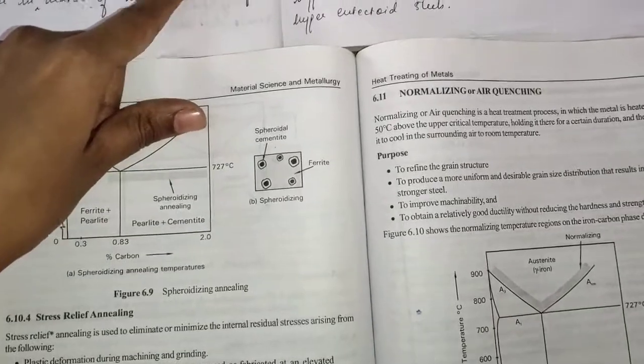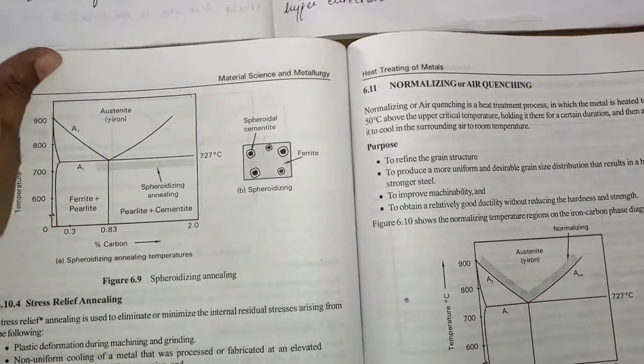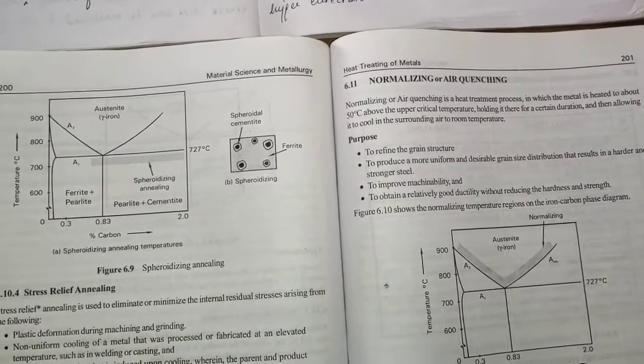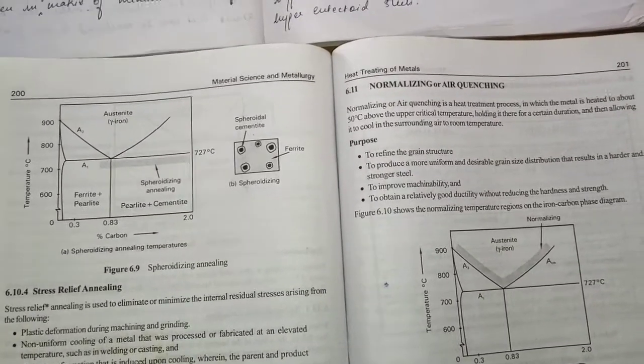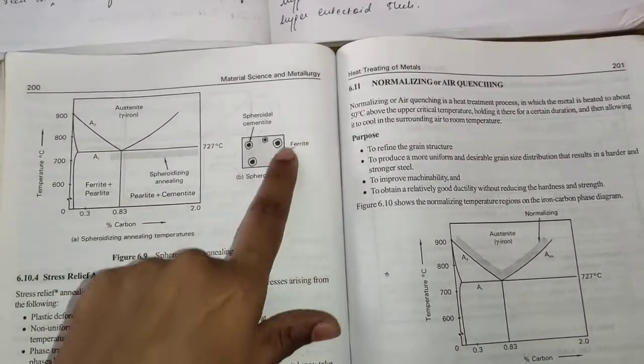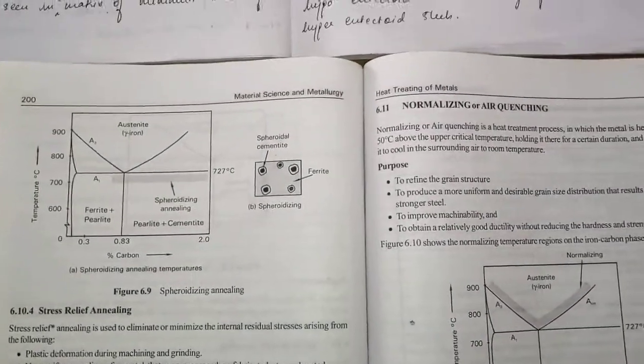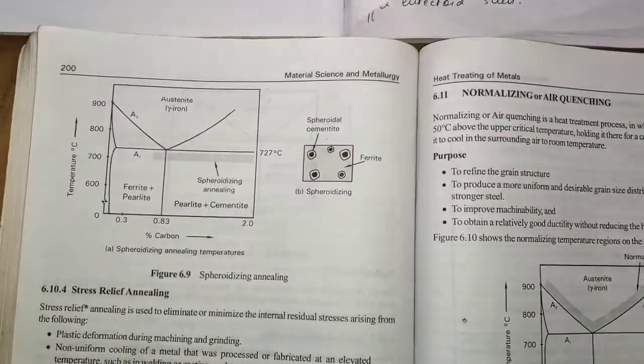When cooled slowly, it is observed that cementite takes the form of a spheroid and is seen in the matrix of minimum traces of alpha ferrite. When I say ferrite, it is alpha ferrite, not delta ferrite. Delta ferrite is active at higher temperatures if you have seen the iron carbon diagram.